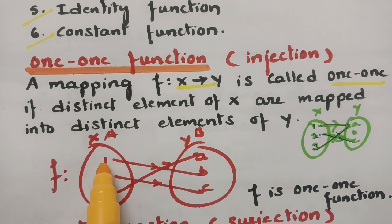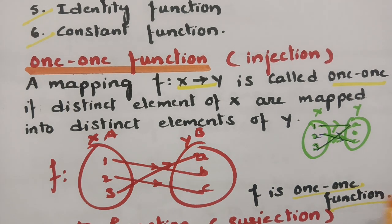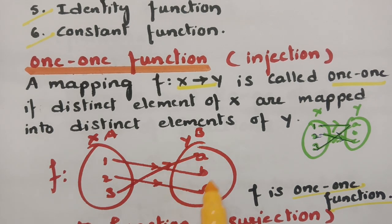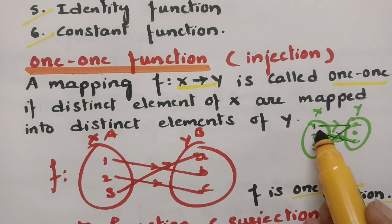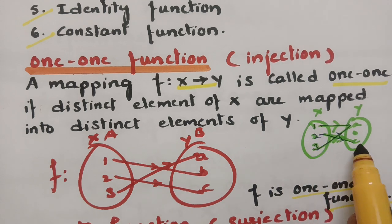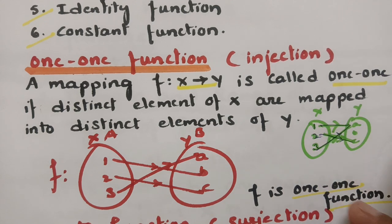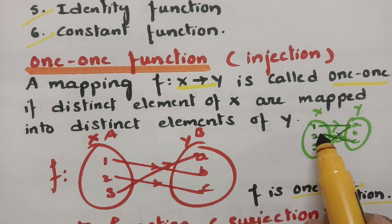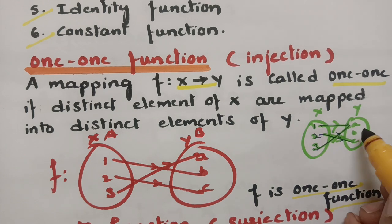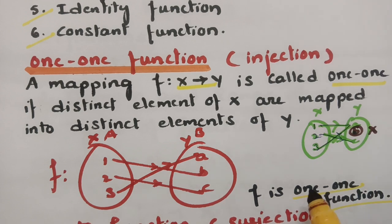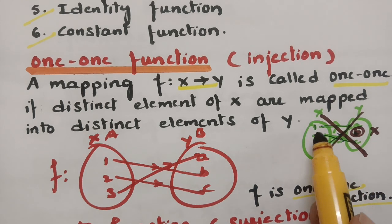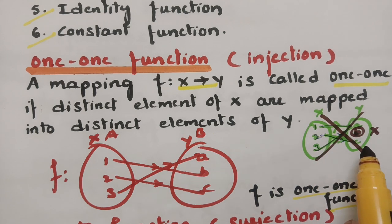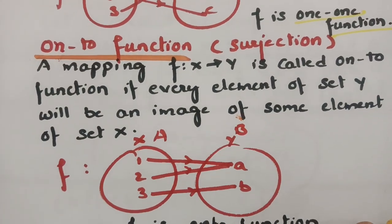For example: 1 is mapped with b, 2 is mapped with c, and 3 is mapped with a — so f is a one-to-one function. But consider another case where set a has {1, 2, 3} and set b has {a, b, c}: if 1 maps to a, 2 maps to c, and 3 also maps to a, then distinct elements of x are not mapped to distinct elements of y, and element b is left over — therefore this is NOT a one-to-one function.